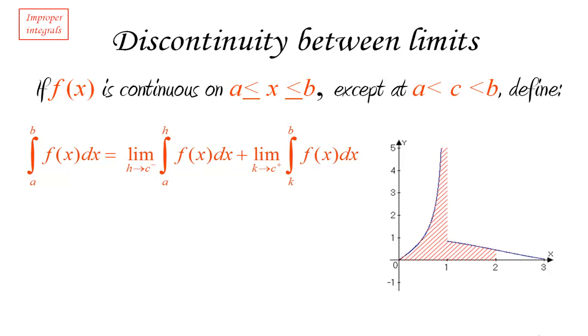So in this case, we would consider the limit for the integral from zero to one plus the integral from one to two. They're both improper, so we're going to compute each of them as a limit.